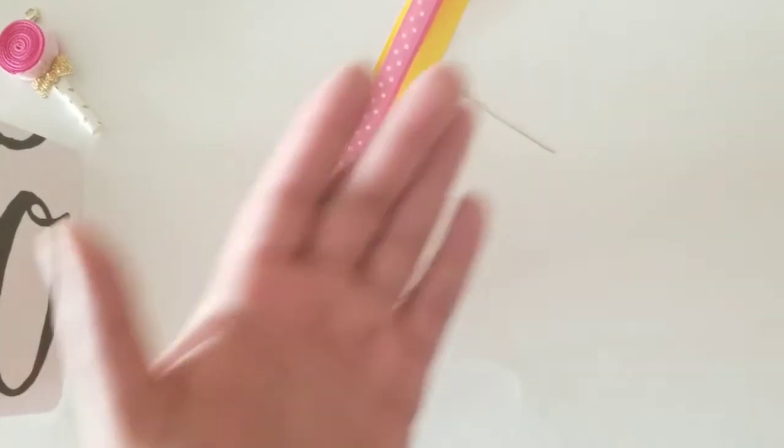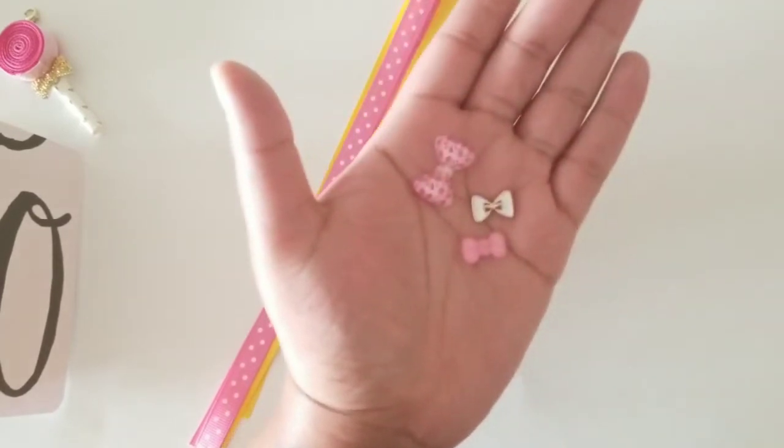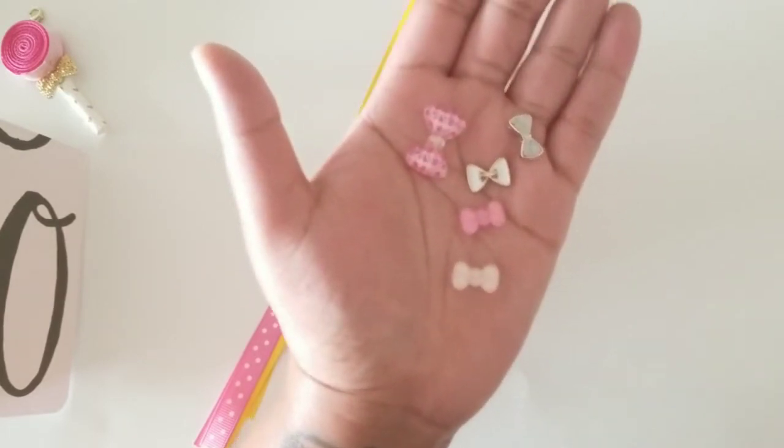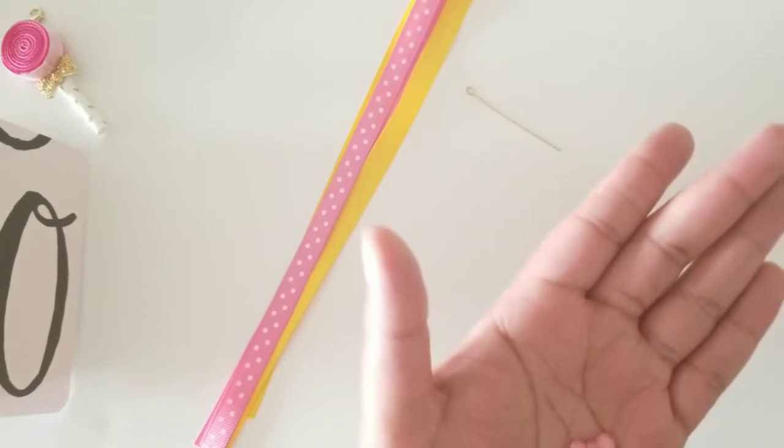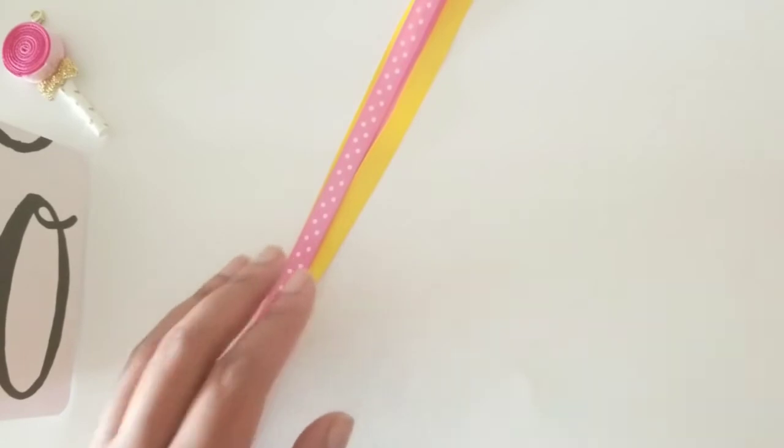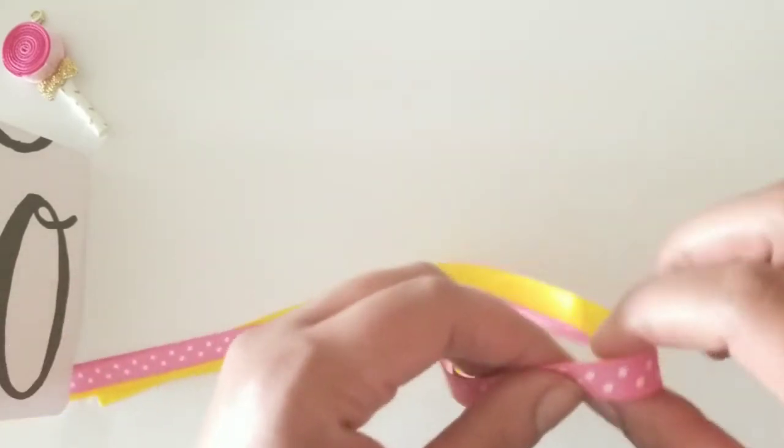And I also have some bows here, some bow charms or flatback bows. And I haven't decided for sure if I'm going to use any of these, but if not, then I'll just kind of go back to my original design and make a bow from ribbon, a fabric bow. So we are going to go ahead and get right into it.